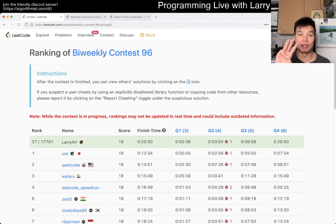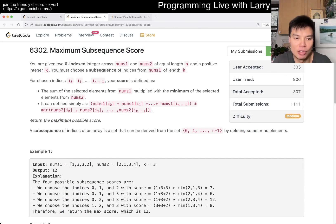Hey, hey everybody, this is Larry. This is me going with Q3 of the bi-weekly contest 96, maximum subsequence score. Hit the like button, hit the subscribe button, join me on Discord, let me know what you think about this problem.